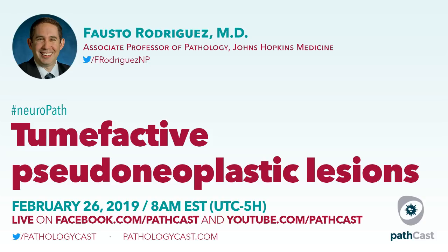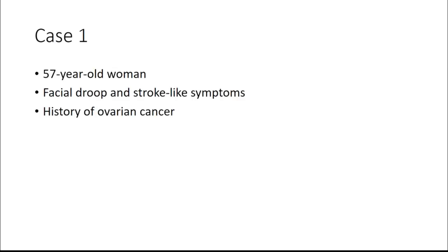The format is going to be similar to other lectures we've done before on Pathcast, which includes a presentation of cases. All slides are virtual slides and I'll show you exactly those slides, complemented with some additional stains or educational cases. At the end we'll have multiple choice questions representative of what we've discussed. Please pay attention. Now we'll start the first case: a 57-year-old woman who developed facial droop and stroke-like symptoms, with a history of ovarian cancer.